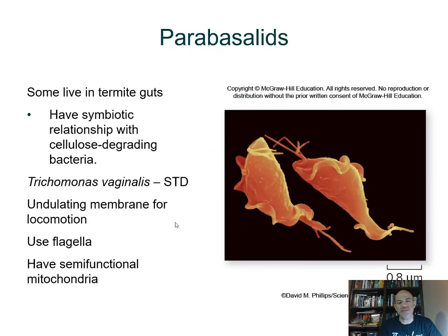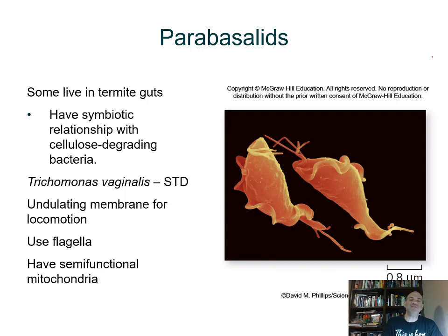For the parabasalids: they also have two nuclei, though this isn't listed on this slide — your textbook will fill in some of this information. They're simple single-celled organisms. You can see some flagella and an undulating membrane. Some of them live in the guts of termites and have a symbiotic relationship associated with the cellulose-degrading enzymes that bacteria produce.